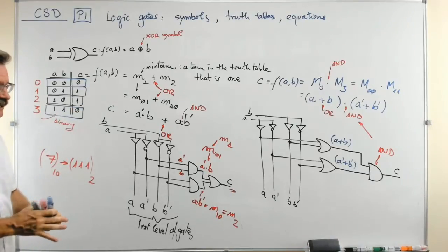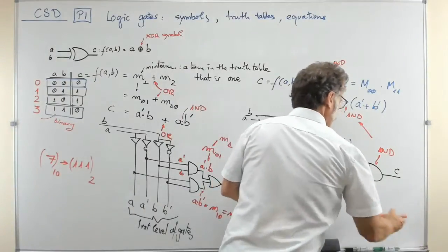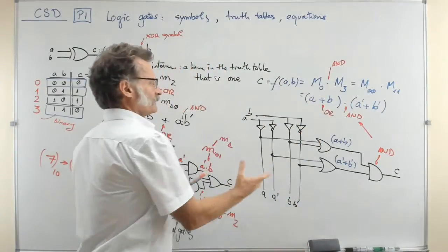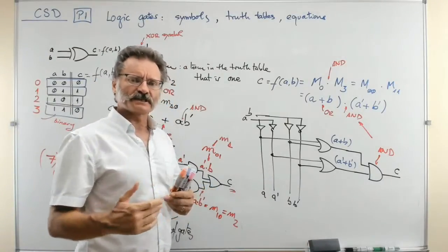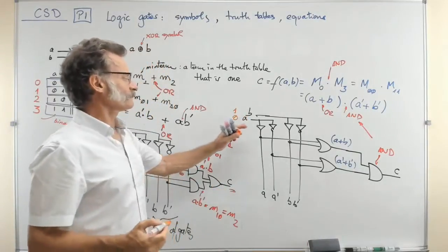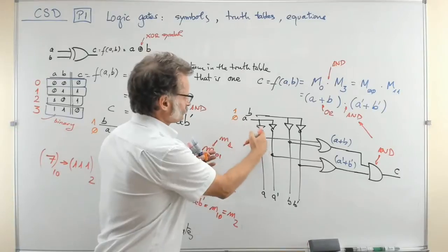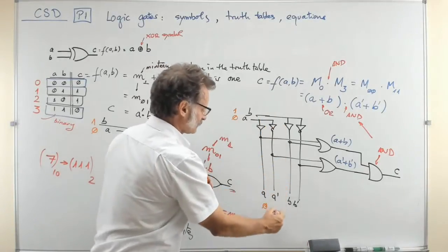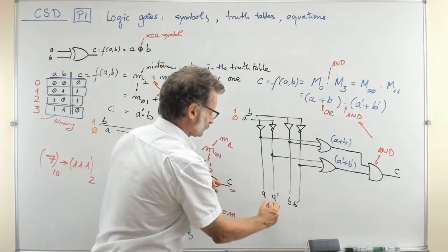If you like, you can verify the circuits. There is always the possibility of checking a circuit by applying stimulus. For example, let's apply 1 and 0 as inputs. You see: 0 is copied to one literal wire. Then the NOT of 0 gives a 1. So here you have a 0 and a 1. And because B is connected to 1, you have a 1 on that wire, but B-not is a 0.